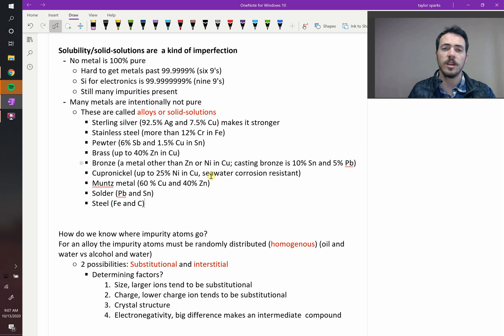Bronze: if you take any metal other than zinc or nickel and put it into copper, you're forming bronze. So for example, tin and lead gives you casting bronze, for making statues and things.